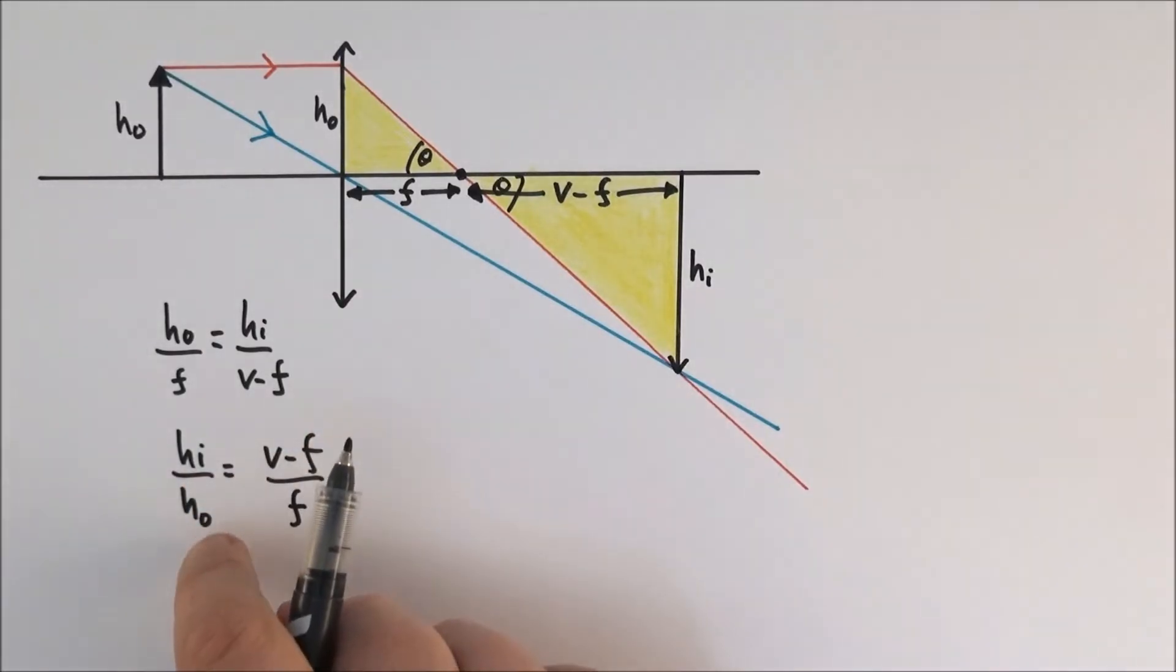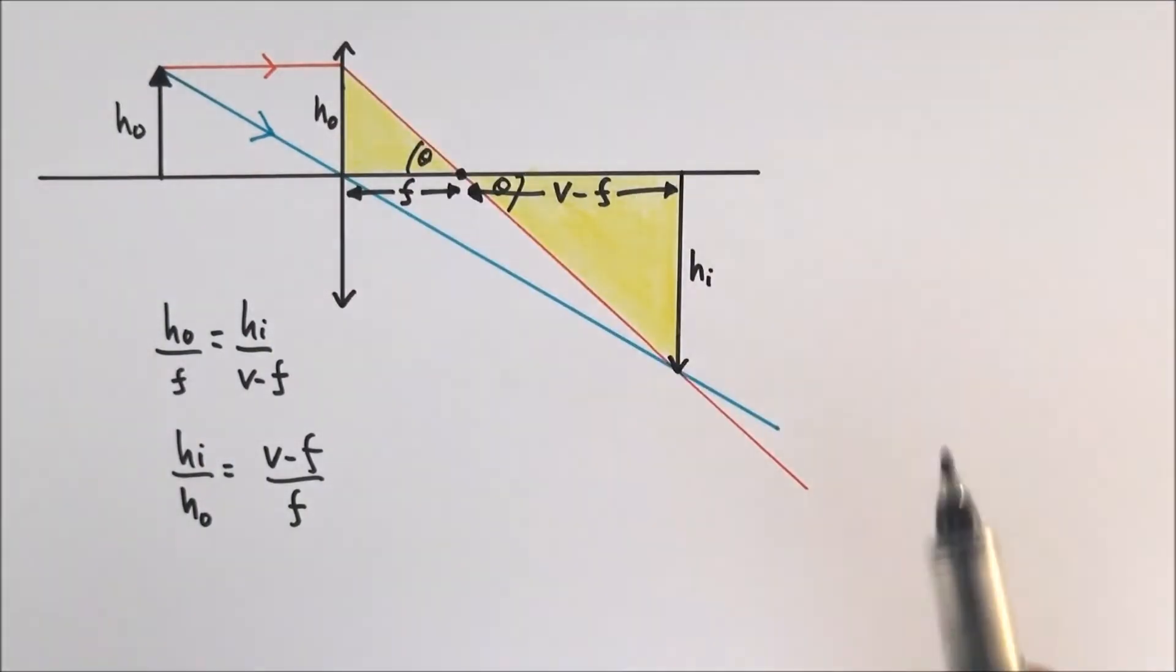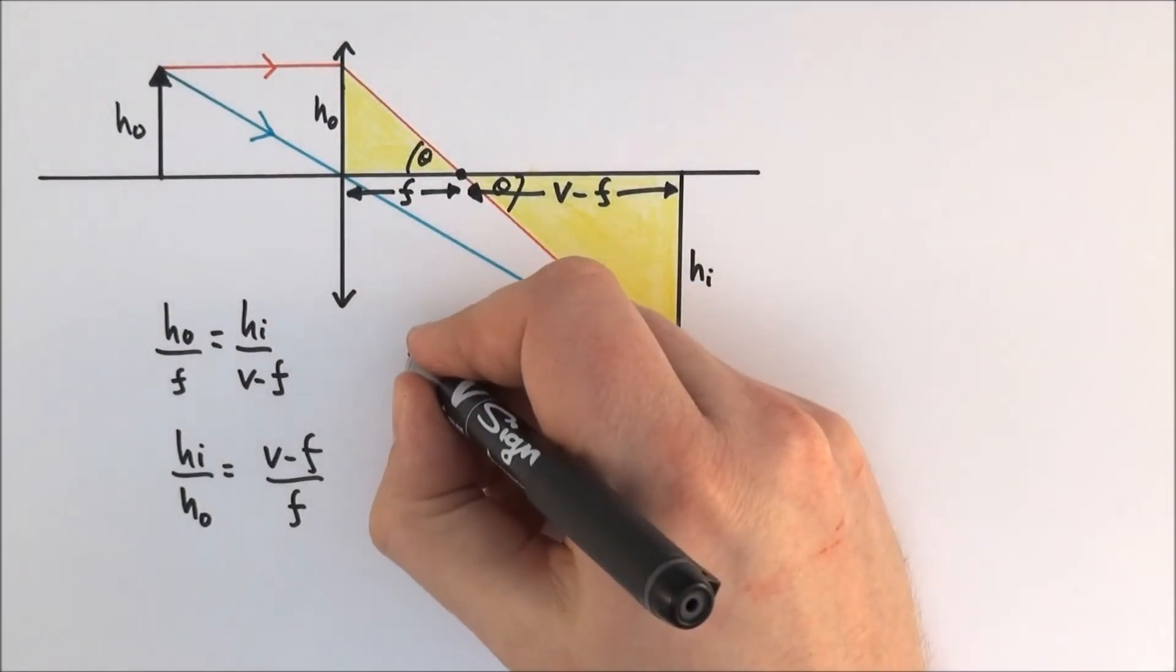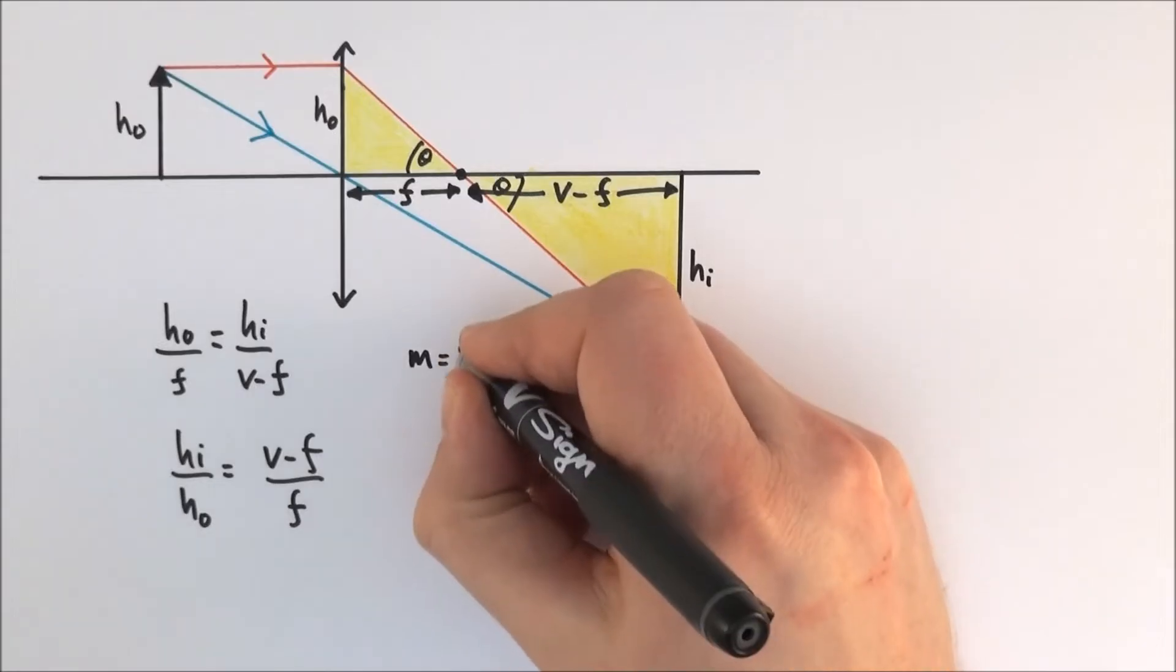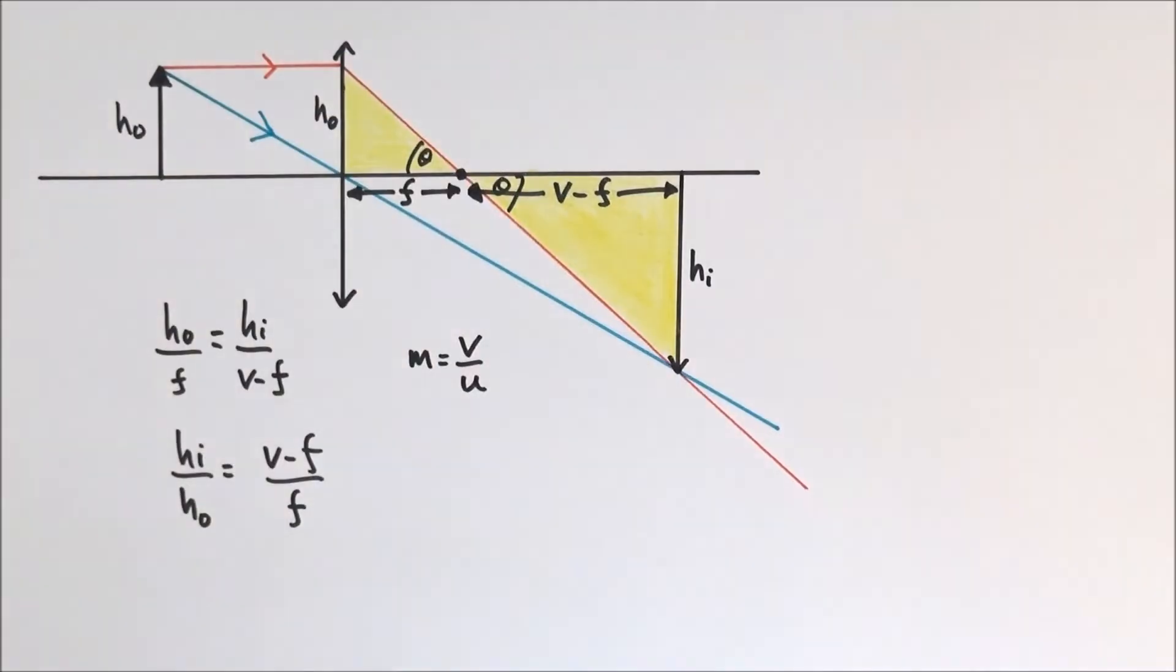Now this thing here might look a bit familiar. The ratio of the image to the object is what we call the magnification and you might remember that the magnification is also equal to the ratio of v divided by u. So this distance divided by this distance.